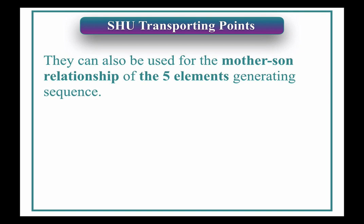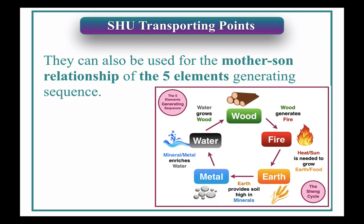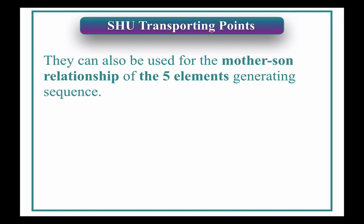The next thing to talk about with the Shu transporting points is their connection to the five elements. They can be used for the mother-son relationship of the five elements generating sequence. The generating sequence is: wood generates fire, fire generates earth, earth generates metal, metal generates water, and water generates wood. That's the characteristic we use the Shu transporting points for — the mother-son relationship.